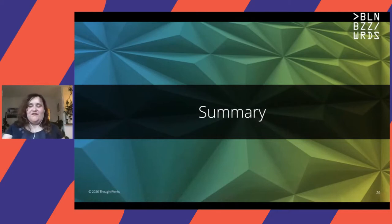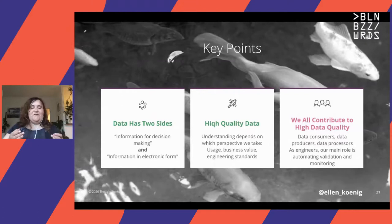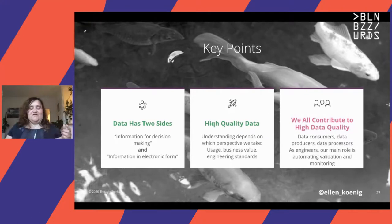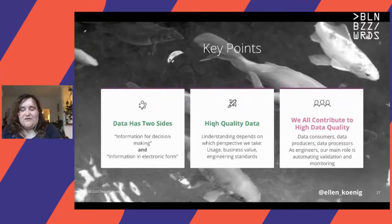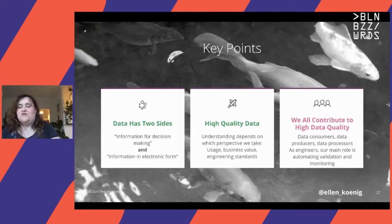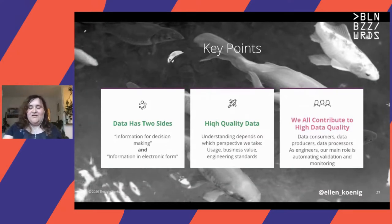To wrap up: data has two sides — information for decision making, and information in electronic form — and both are relevant to data quality management. Data quality has three perspectives: usage, business value, and engineering standards. All of us — data consumers, data producers, and data processors — contribute to high data quality. As engineers, our main role is to automate the validation and monitoring.